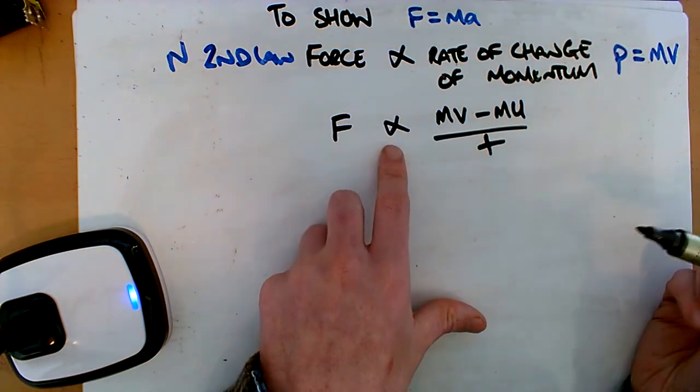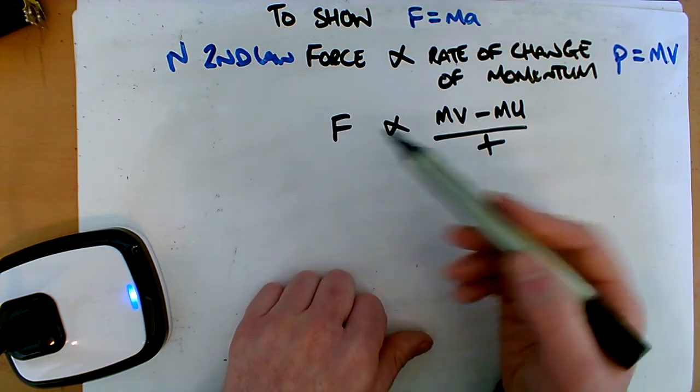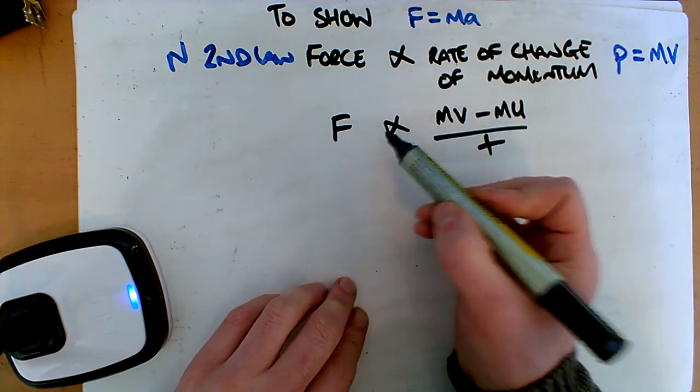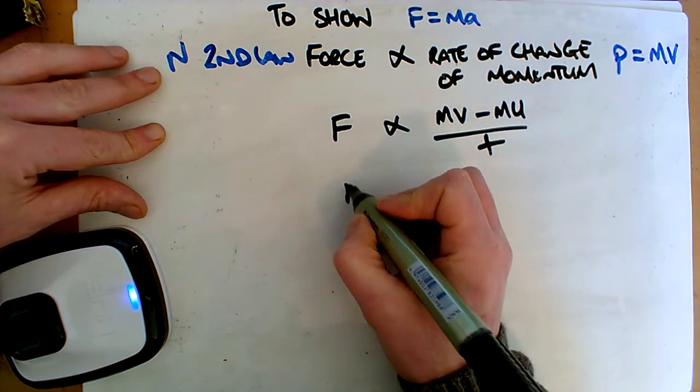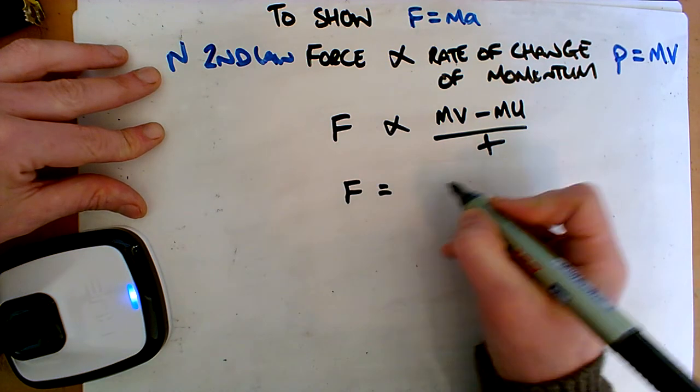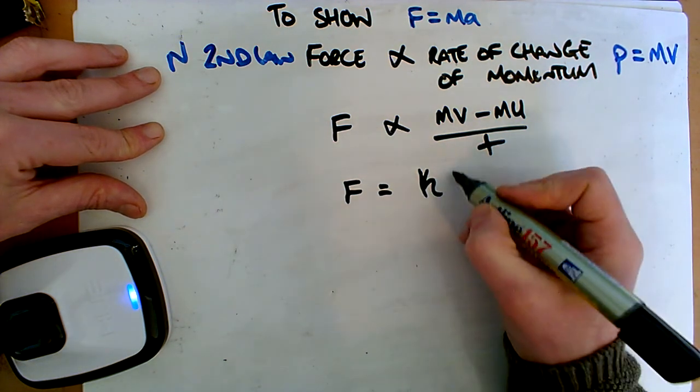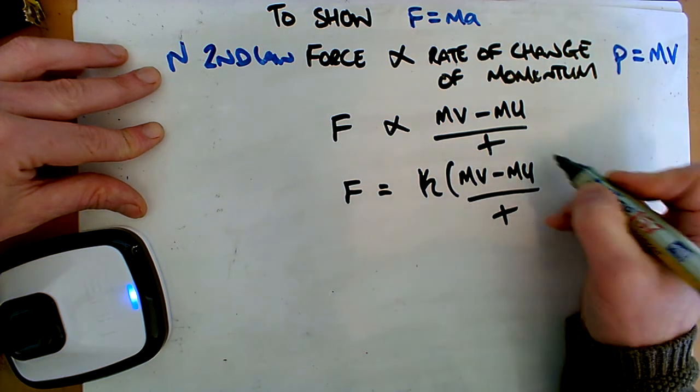This thing is proportional, which means these two are related, but we don't really know what it's by. It could be by 2 or by 3 or by a half or by anything. When we want to turn it to an equals, we put in a variable. In this case, we're going to use the variable K. So Mv minus Mu all over T.